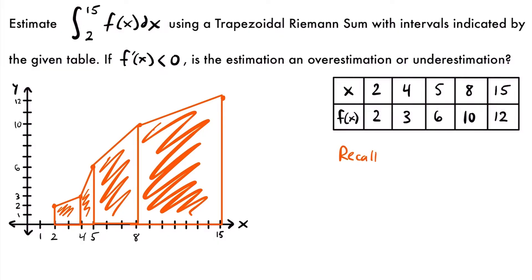Recall that the area of a trapezoid with width delta x and bases labeled a and b is equal to one-half times (a plus b) times delta x. For each of the four trapezoids, we find the height of each side, multiply by the width, then multiply by one-half, and add them all together.